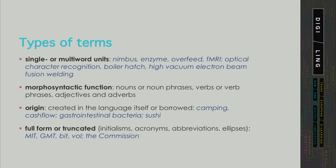We might also want to examine the origin of terms — whether a term has been created in the language itself through derivation or compounding, or whether it has been borrowed from another language. For example, 'camping' and 'cash flow' are typical domestic terms, while 'gastrointestinal bacteria' is of classical origin, and 'sushi' is a more modern borrowing from Japanese.